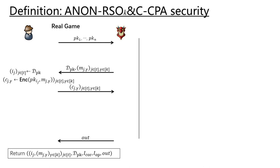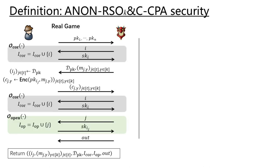In the real game, there are totally N public keys. The adversary specifies a public key distribution and K·T challenge messages. In other words, the adversary knows all the encrypted messages, but does not know which public keys are used for encryption exactly. The adversary can make two kinds of oracle queries: user corruption queries and selective opening queries. For user corruption queries, the adversary submits index I and receives the secret key SK_I. For selective opening queries, the adversary queries on J and receives SK_{I_J}, meaning he asks to open the J-th ciphertext. Finally, he returns an output.